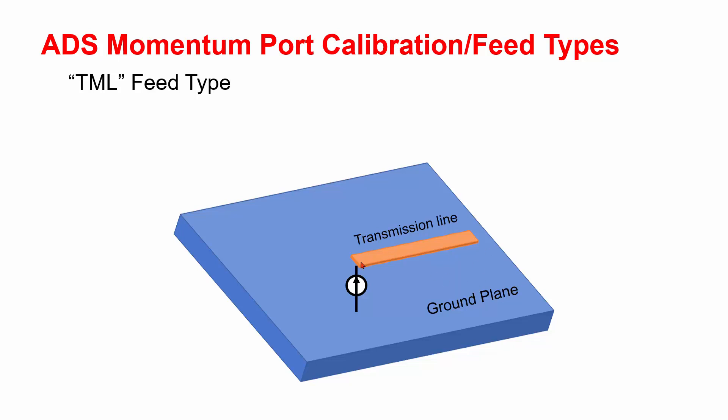Suppose you want to characterize the transmission line structure shown in the slide, but directly attaching the source between plus and minus terminals. You will see some fringing capacitance from the open end effect, which is an unwanted parasitic.